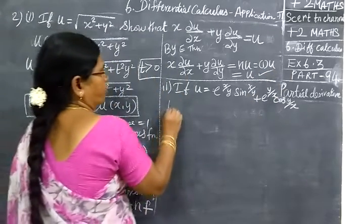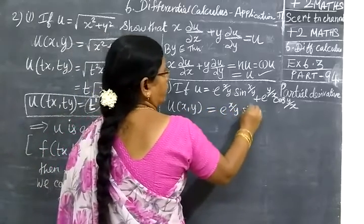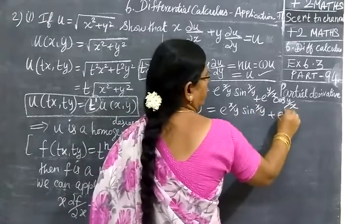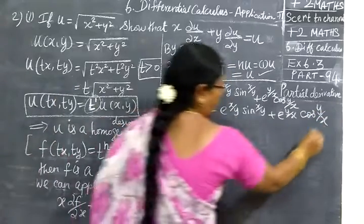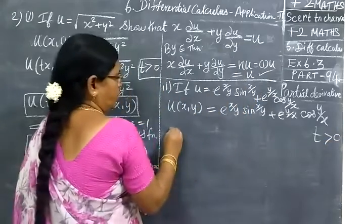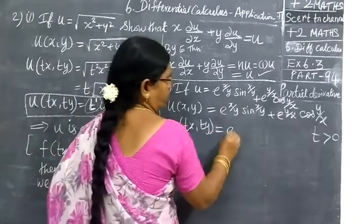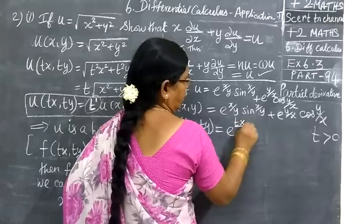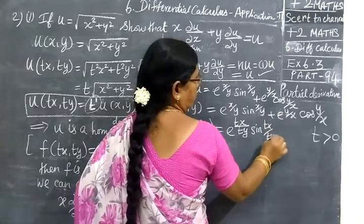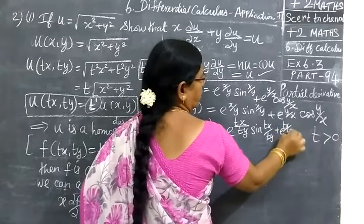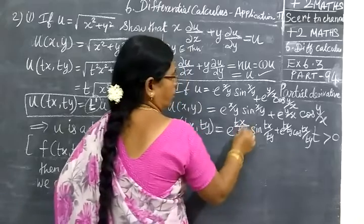For the next one, the same way: u of x, y equal to e power x/y times sin(y/x) plus e power x/y times cos(y/x). Now for t greater than 0, we are multiplying x by t and also y by t. So wherever x appears we write tx, wherever y appears we write ty: e power tx/ty times sin(tx/ty) plus e power tx/ty times cos(tx/ty). All the t values are getting cancelled.